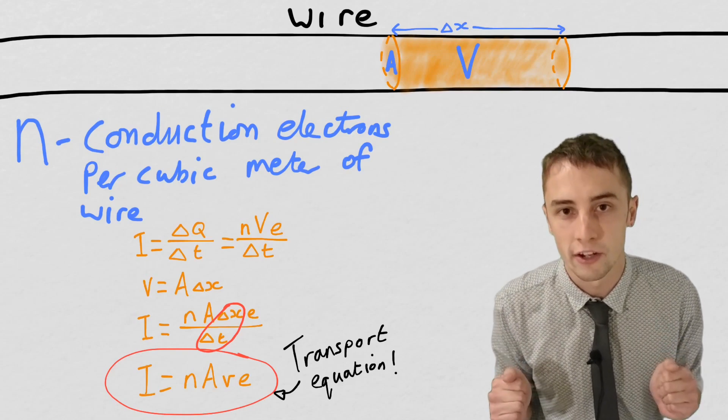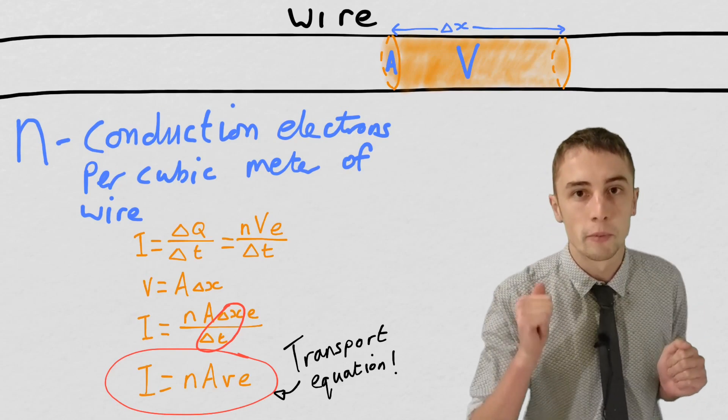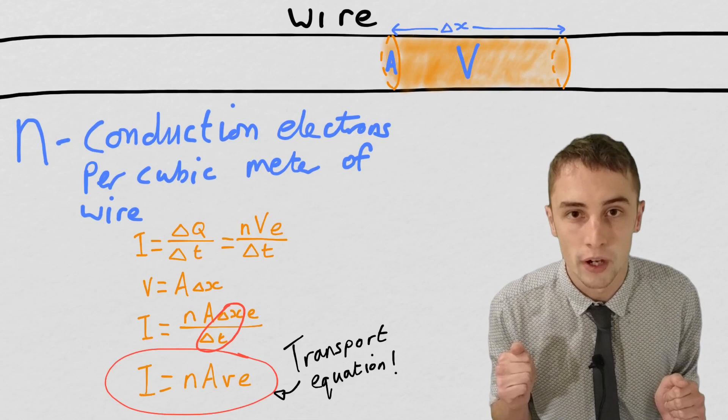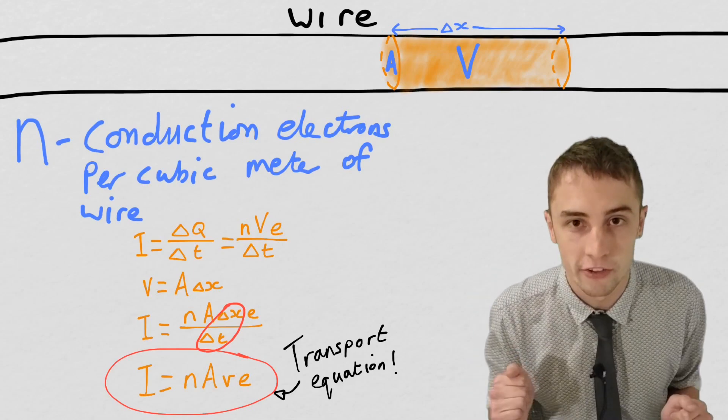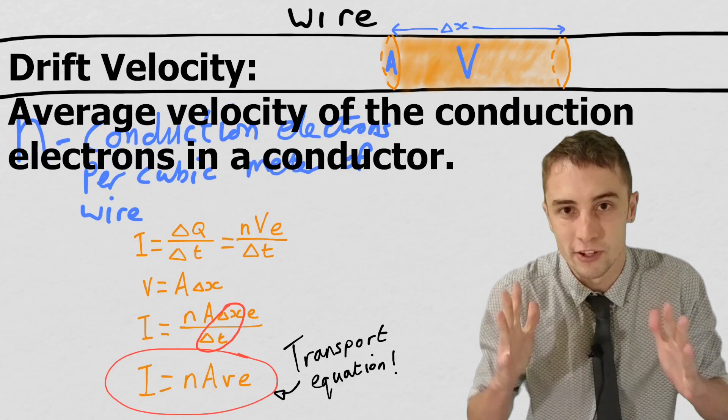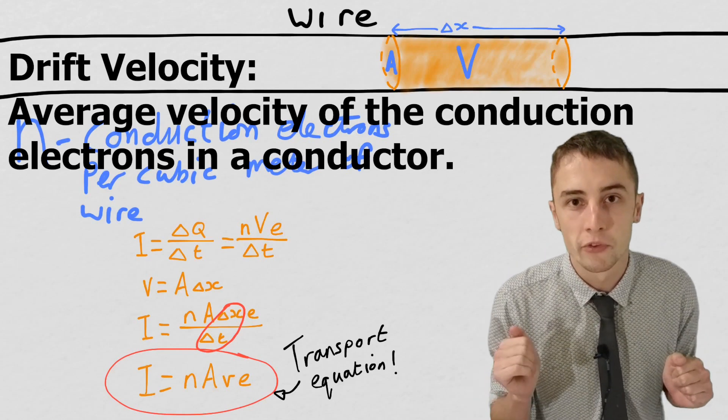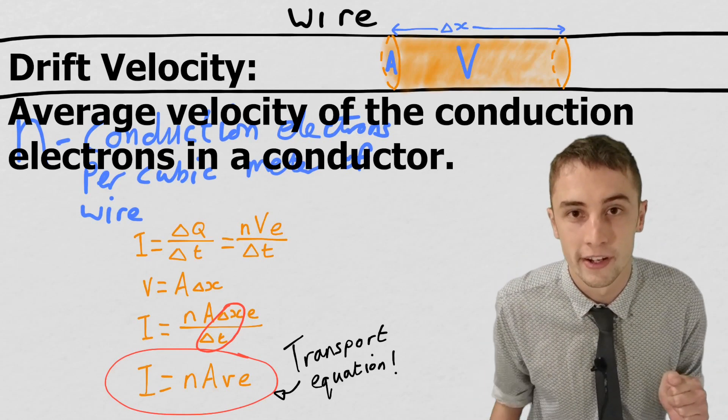And then we've got the number of electrons per cubic meter multiplied by the cross-sectional area of the wire multiplied by the drift velocity of the electrons. That is the average overall motion of the electrons through the wire multiplied by the charge on an electron.